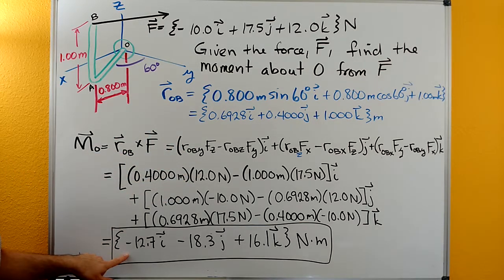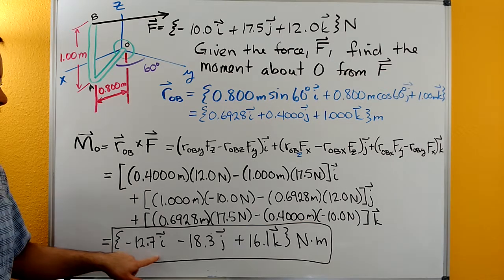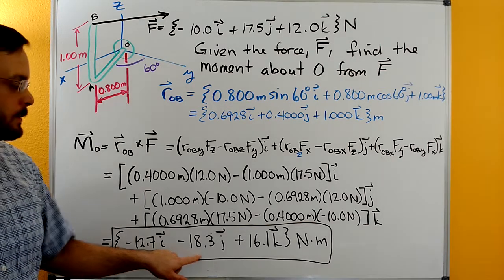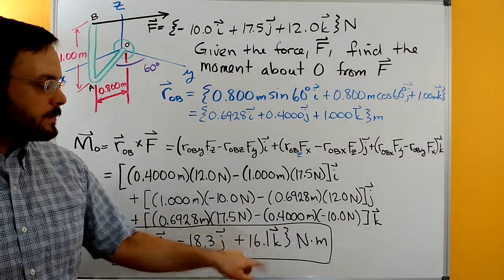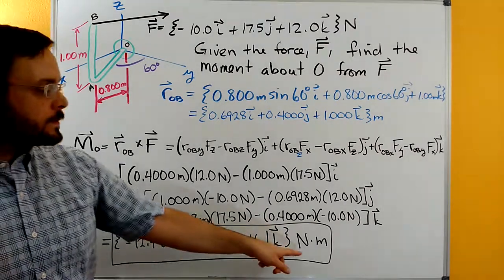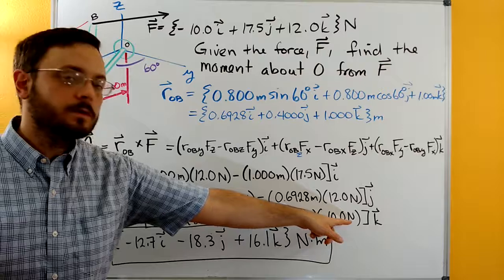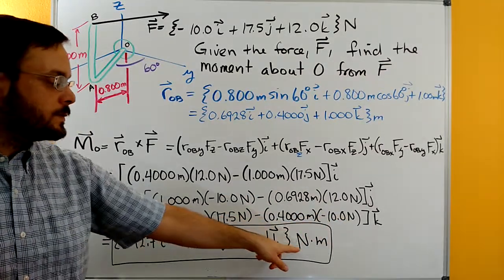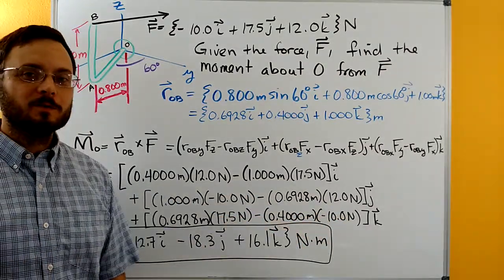you'll get that your moment vector is negative 12.7i, negative 18.3j, plus 16.1k, and then the units are going to be newton meters because you had force times distance, so newtons times meters. Thanks for watching.